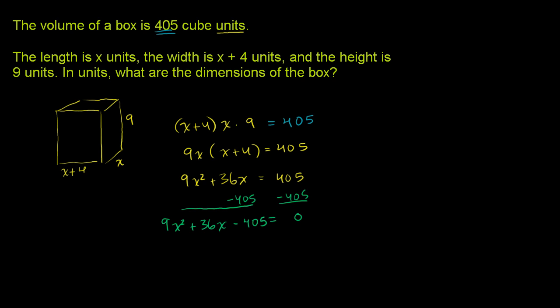Let's figure out what 405 divided by 9 is. 9 goes into 405. 9 goes into 40 4 times. 4 times 9 is 36. Subtract, you get 45. 9 goes into 45 5 times. 5 times 9 is 45. Subtract, you get 0. So it goes 45 times.